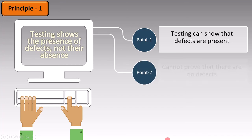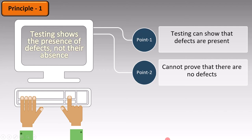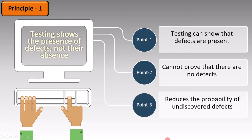The second point is that testing cannot prove that there are no defects. Just because you have not found a defect does not mean there are no defects in the software. So testing can't prove the absence of defects. The final point is that testing reduces the probability of undiscovered defects.